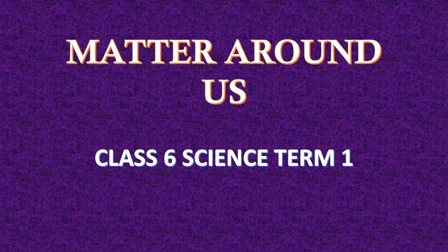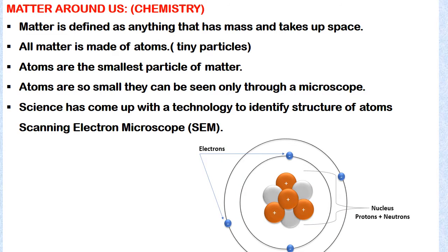Matter around us. Matter is defined as anything that has mass and takes up space. All matter is made up of atoms. Atoms are the smallest particle of matter, and they are so small that they can be seen only through a microscope. Science has developed a technology to identify the structure of atoms using a scanning electron microscope.